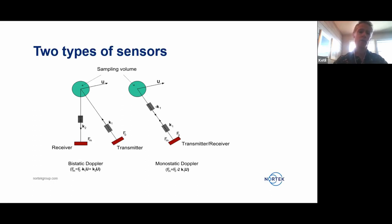And effectively, what we do is to measure the speed of the particles in that sampling volume along an axis that lies between these, which is the bistatic axis.